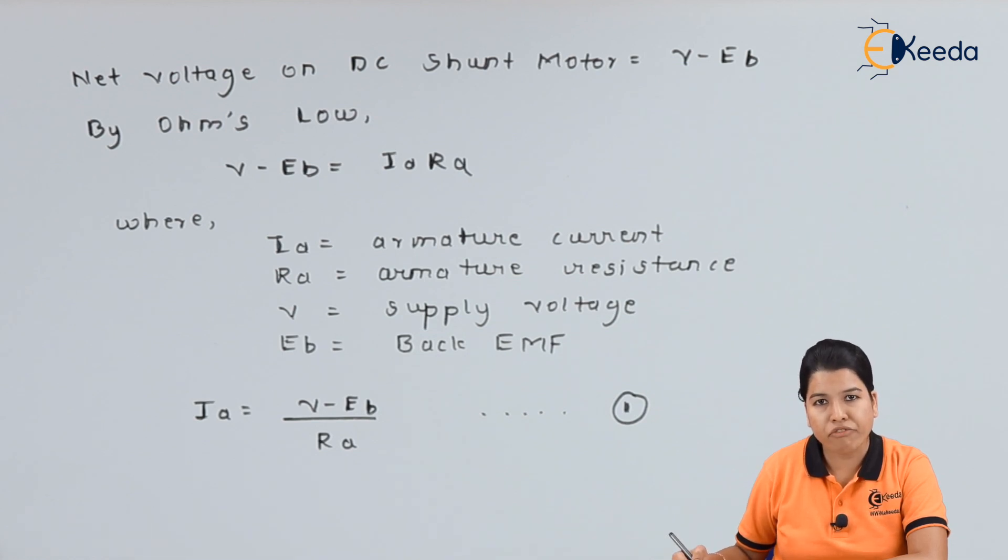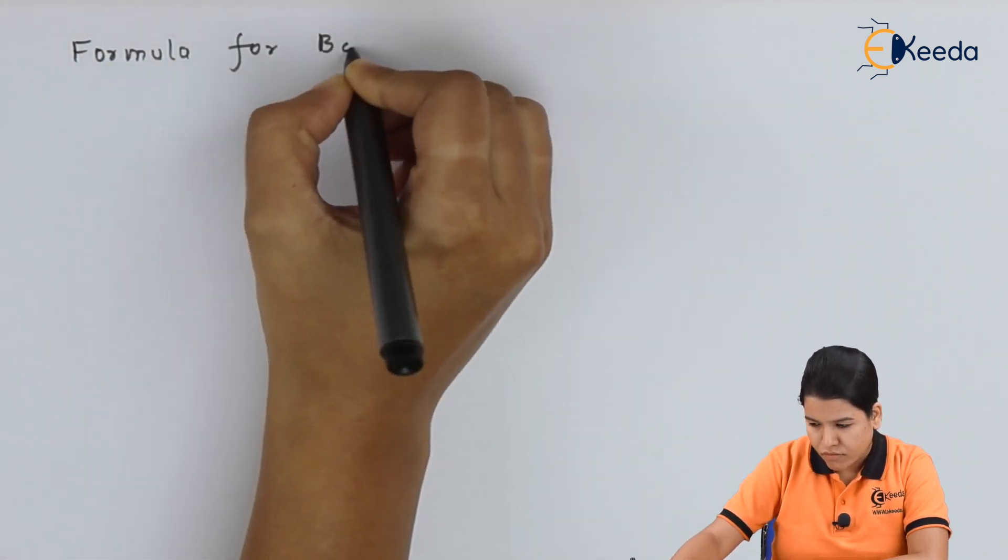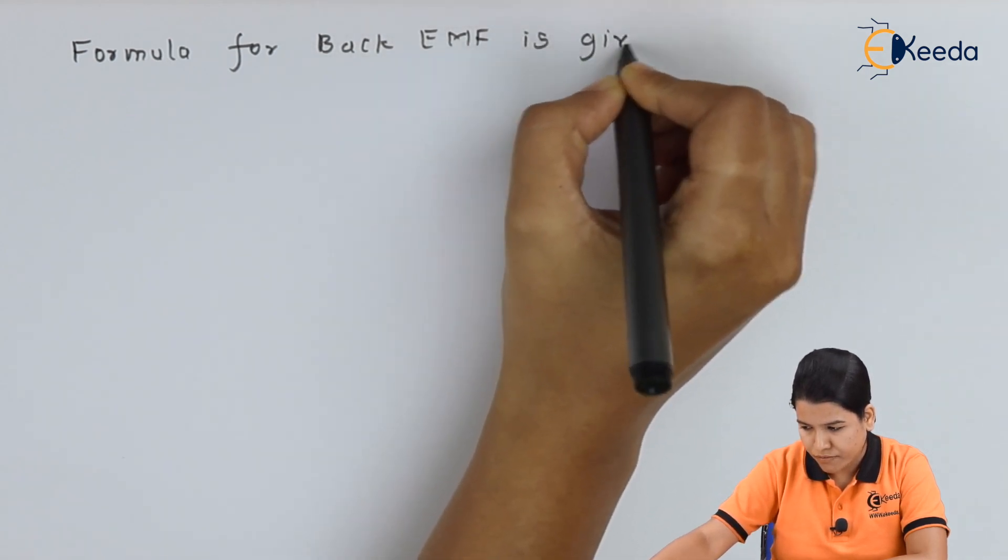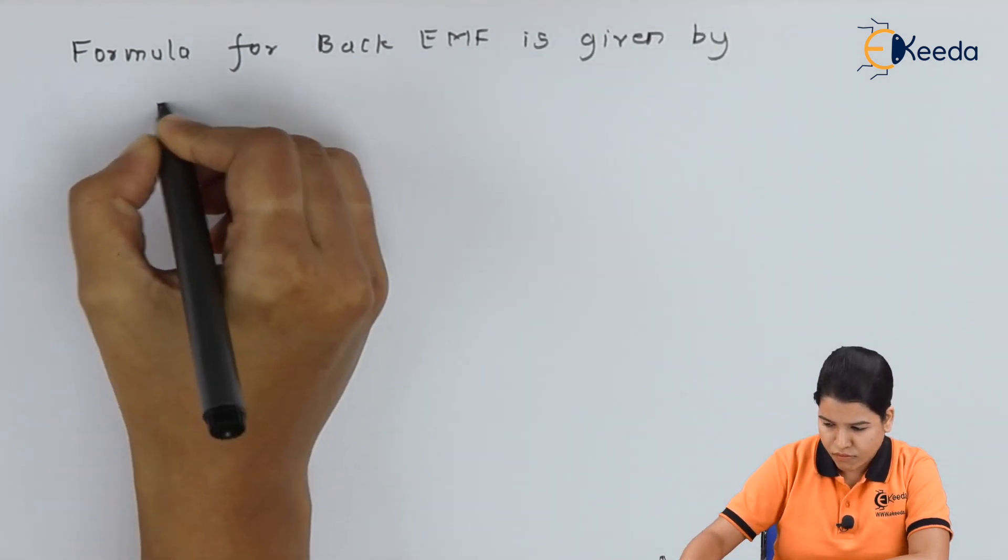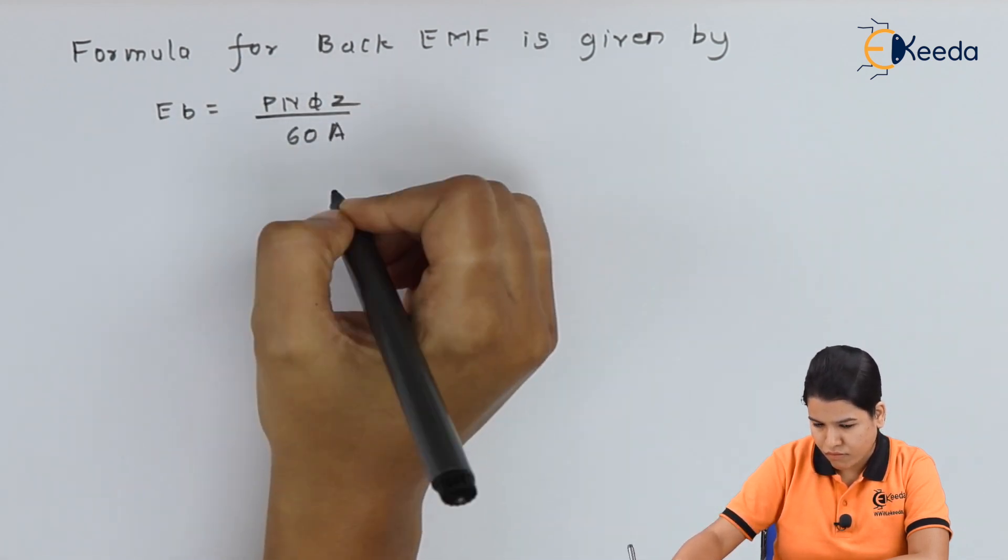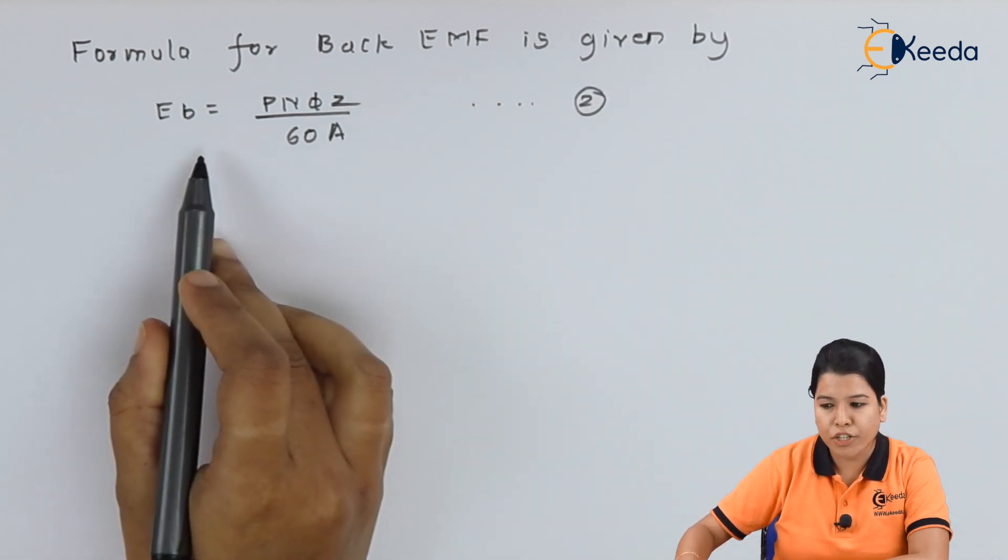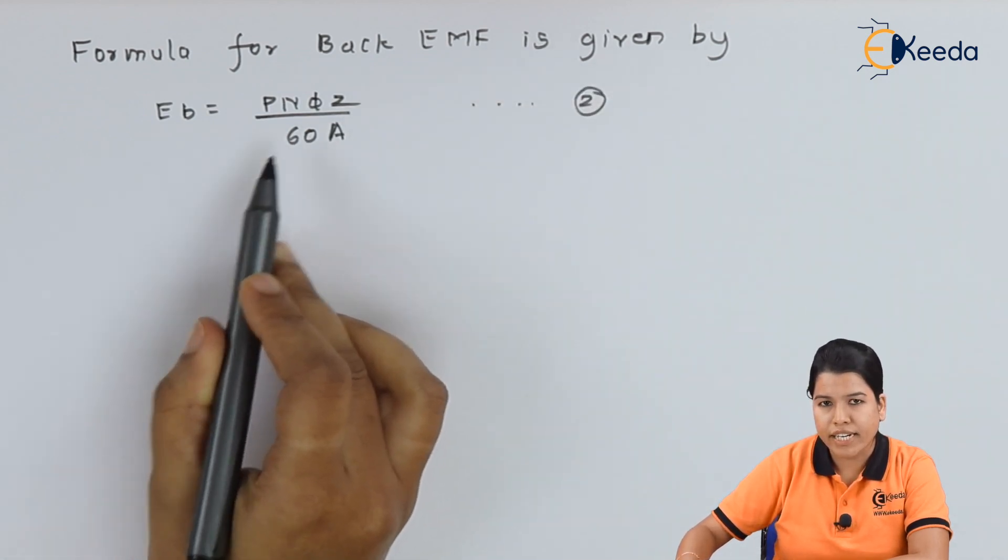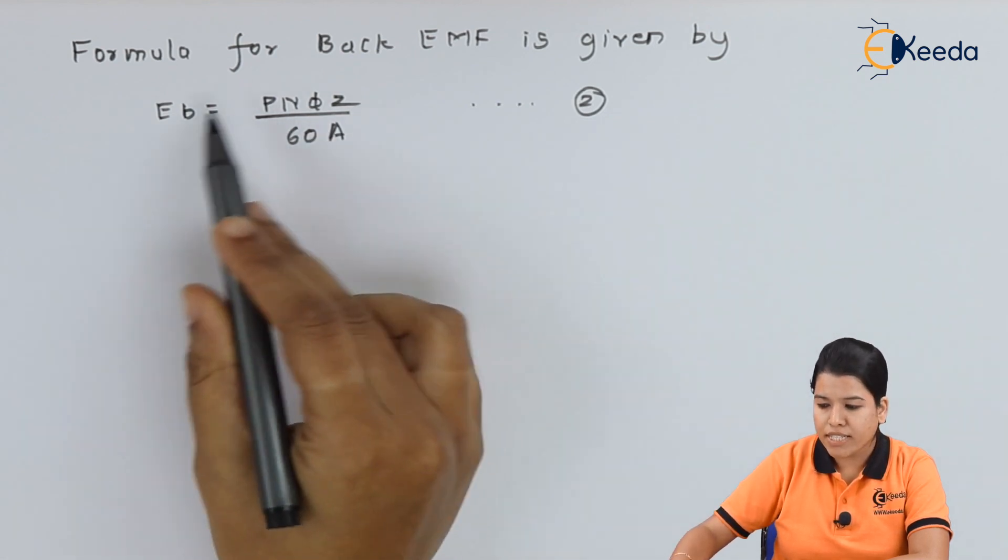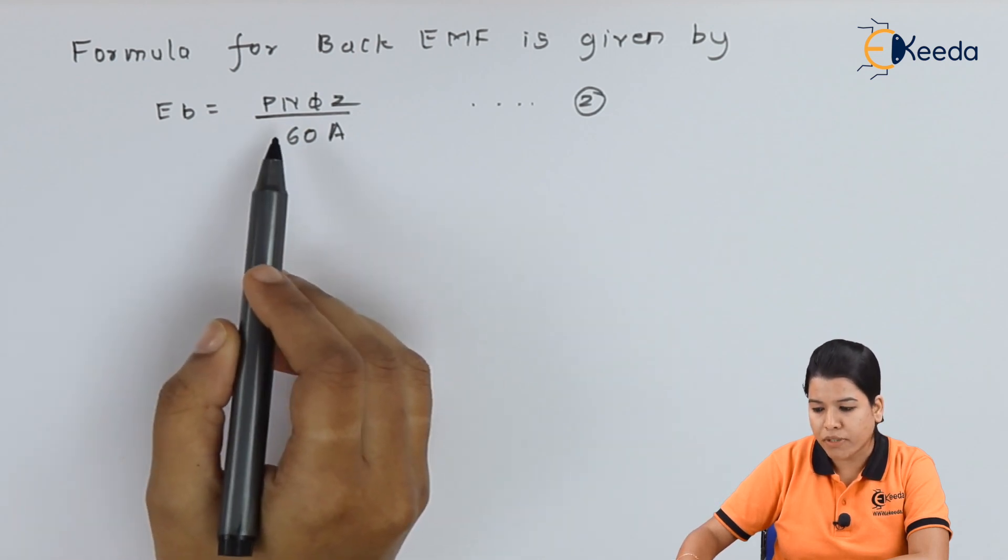Now we know the formula for back EMF which is given by Eb is equal to P N phi Z divided by 60A, equation number two. From this equation we can say that back EMF is directly proportional to speed.